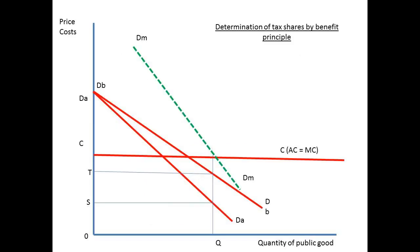How should we determine tax? One suggestion is called the benefits principle, where payment of tax is made according to benefit received. However, different individuals place different value on benefits. Here the benefit is expressed by demand. Individual A has a demand curve DADA and individual B a demand curve DBDB. The sum of the curves is DMDM. Assuming that marginal costs and average costs are the same, consider the demand when quantity Q is supplied. Individual A is prepared to pay tax S and individual B is prepared to pay tax T. Imagine this going across millions of taxpaying individuals and across a large number of public goods, and it is easy to see the problem with this approach.